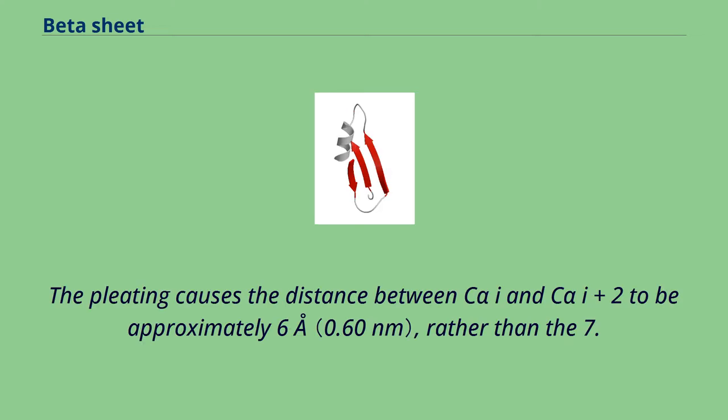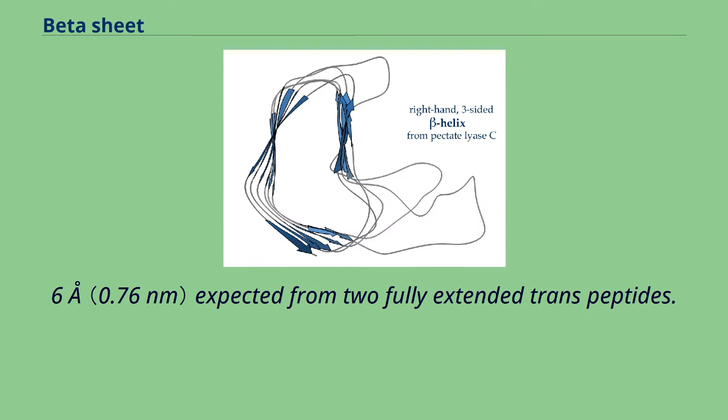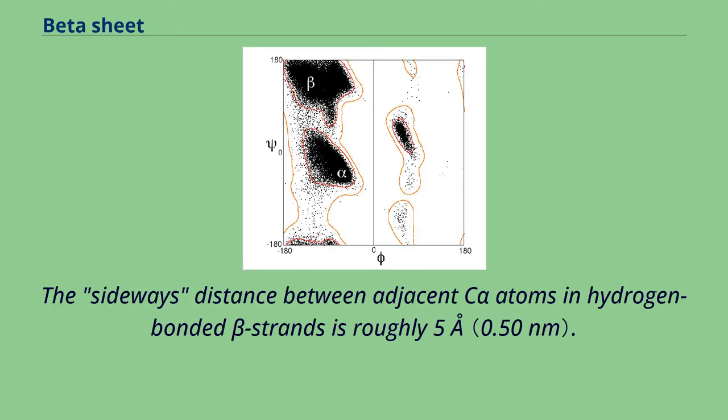The pleating causes the distance between C-alpha-i and the C-alpha-i plus 2 to be approximately 6 angstrom, rather than the 7.6 angstrom expected from two fully extended transpeptides. The sideways distance between adjacent C-alpha atoms and hydrogen-bonded beta strands is roughly 5 angstrom.